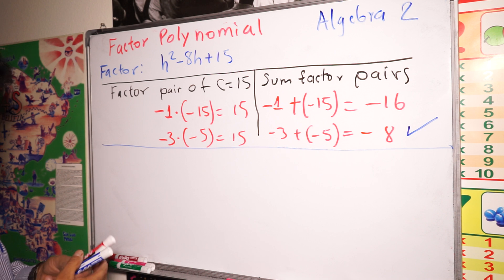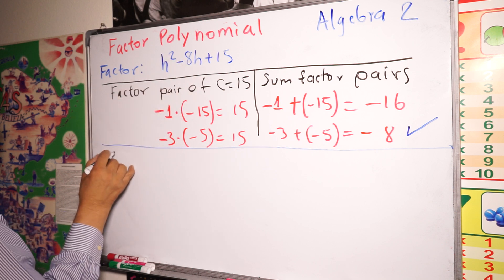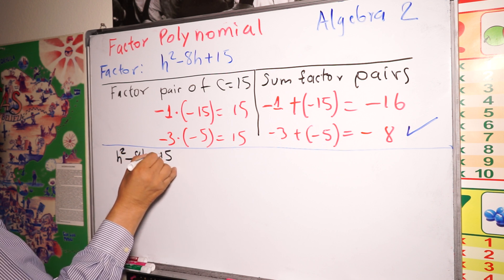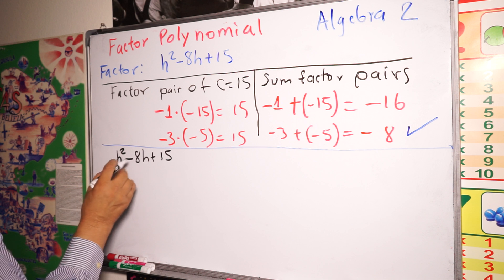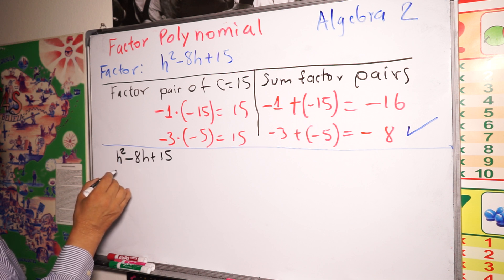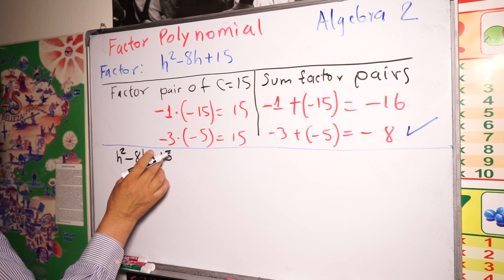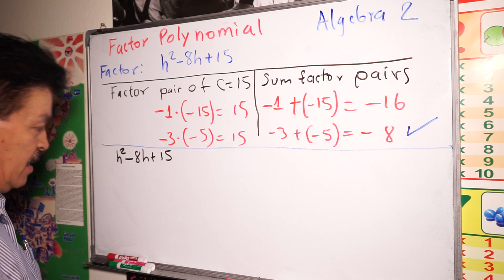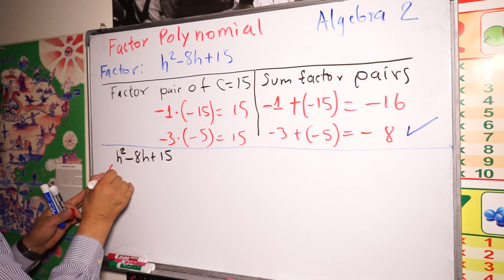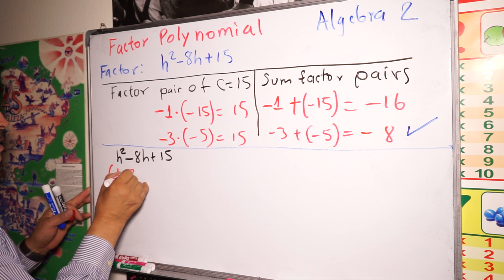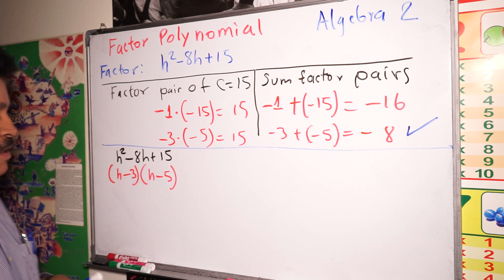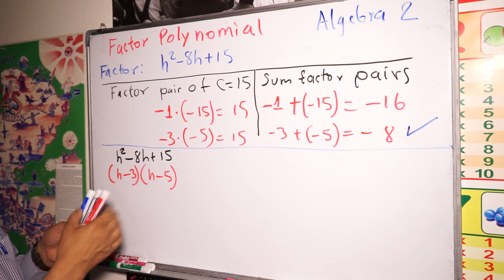Now let's write the solution. The factors are negative 3 and negative 5, so the quadratic h squared minus 8h plus 15 factors as (h minus 3)(h minus 5). Those are our factors.